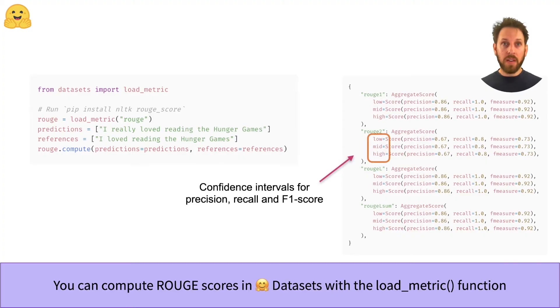The output from the calculation contains a lot of information. The first thing we can see is that the confidence intervals of each ROUGE score are provided in the low, mid, and high fields. This is really useful if you want to know the spread of your ROUGE scores when comparing two or more models.